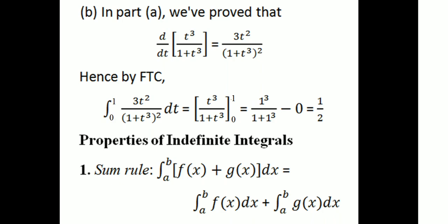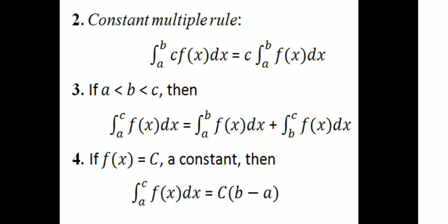Properties of the indefinite integral. First, the sum rule: the integral from a to b of f of x plus g of x dx equals the integral from a to b of f of x dx plus the integral from a to b of g of x dx. Second, the constant multiple rule: the integral from a to b of c times f of x dx equals c times the integral from a to b of f of x dx.